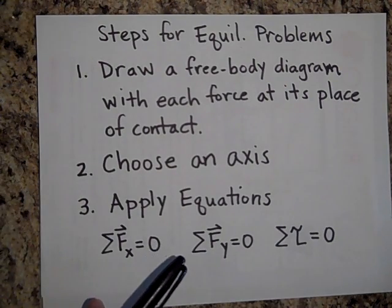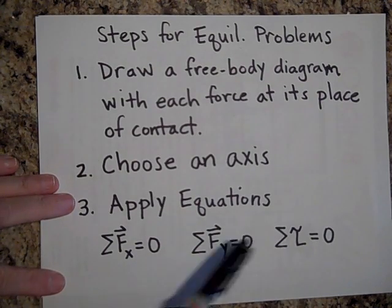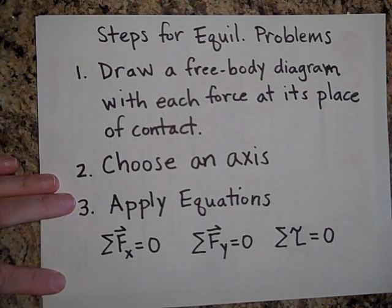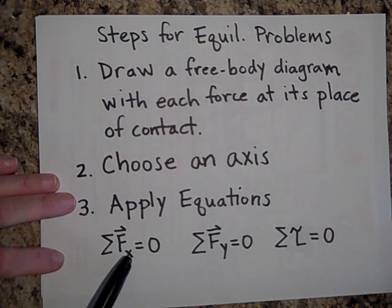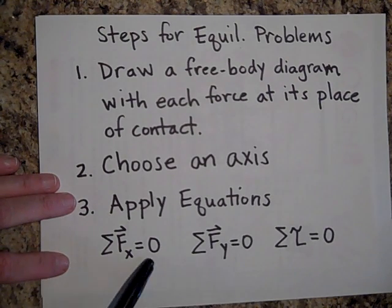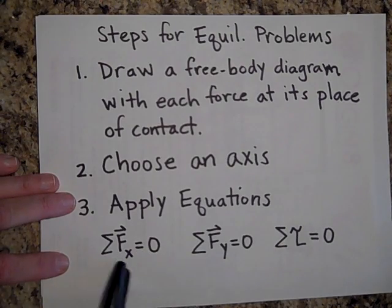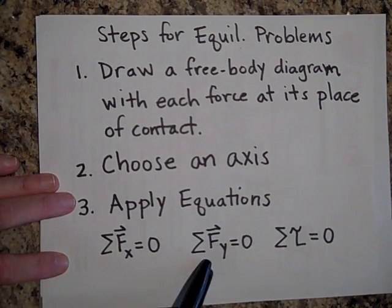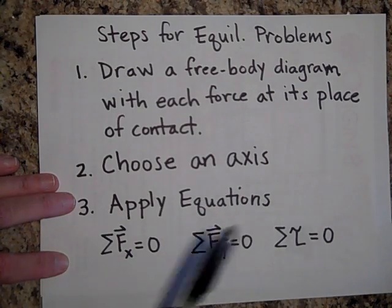And finally, we'll apply these three equations. These are the three equations to have something not rotate or accelerate. There is one in the z direction too. The net force in the z direction has to be equal to zero too, but I'll just use these because these are what your problems use. So the net force in the x direction has to be zero, the net force in the y direction has to be zero, and the net torque has to be zero.